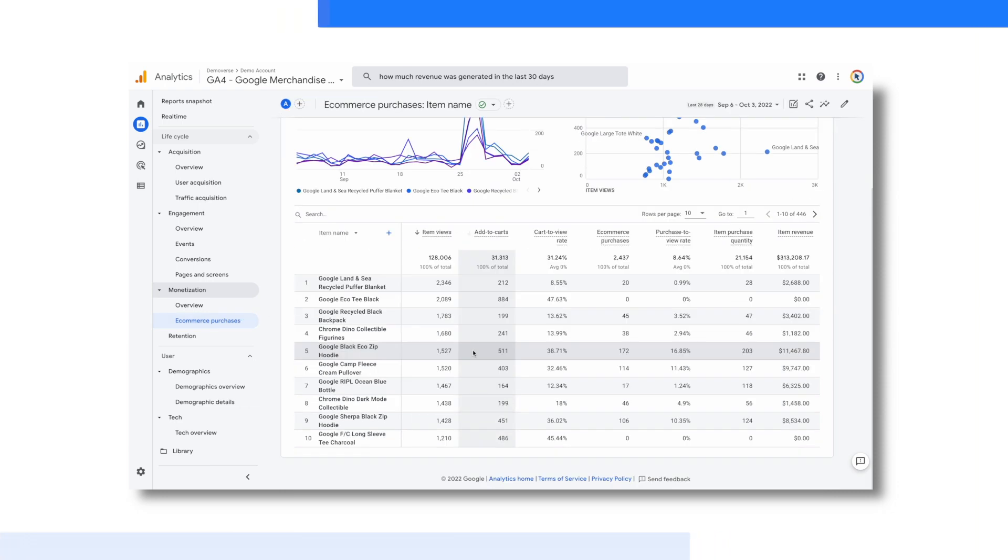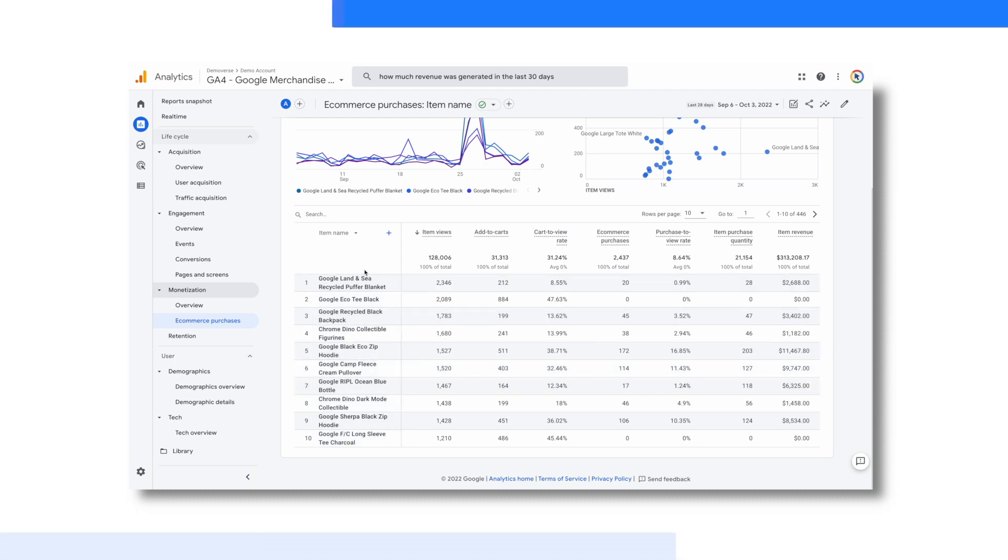The team can use this report to identify areas of opportunities where they might see products with excellent conversion rates that would benefit from having additional exposure. There are a number of improvements and meaningful differences when comparing reports in Universal Analytics and Google Analytics 4. For more information on this topic, check out the link in the description.